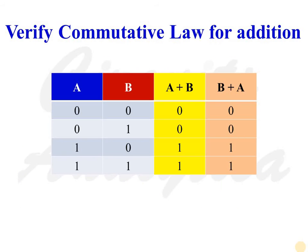Using this truth table, we can verify the commutative law for addition. There are two variables A and B. The third column shows the result of A OR B, and the fourth column shows the result of B OR A. If we compare these two columns, we will find that their entries are the same — that means A plus B is equal to B plus A. So commutative law for addition is verified.